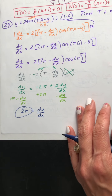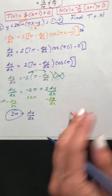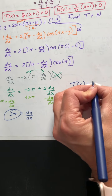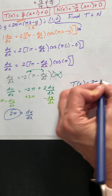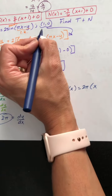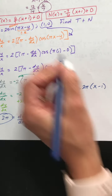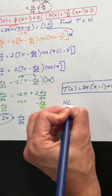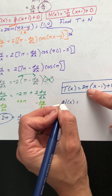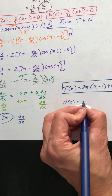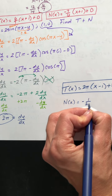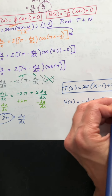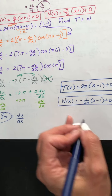The slope can have pi in it — don't second-guess that. So we write t of x equals 2pi times (x minus 1) plus 0. For the normal line, n of x equals the opposite reciprocal of 2pi, which is negative 1 over 2pi, times (x minus 1) plus 0.